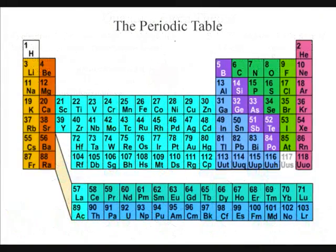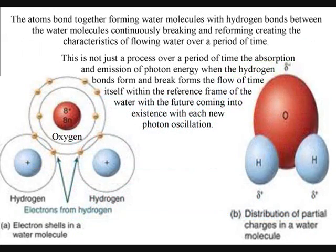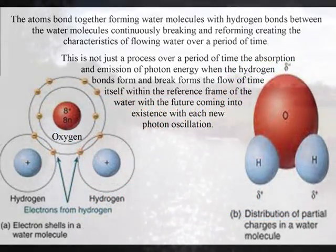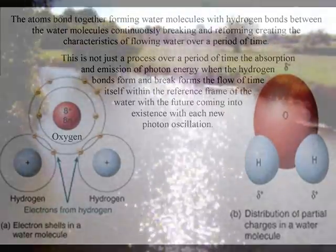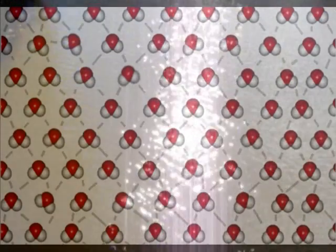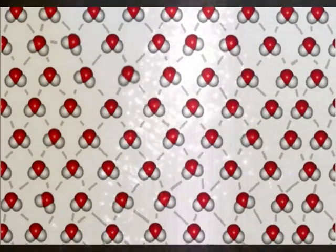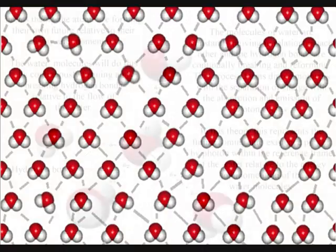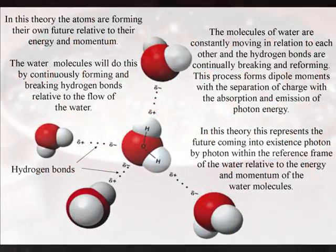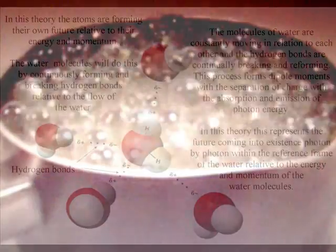A simple example of this is water with hydrogen bonds breaking and reforming releasing photon energy with the future unfolding photon by photon relative to the atoms or molecules of the flowing water. The interactive potential of this process can be seen with water being able to form the shape of any object that it is poured into.